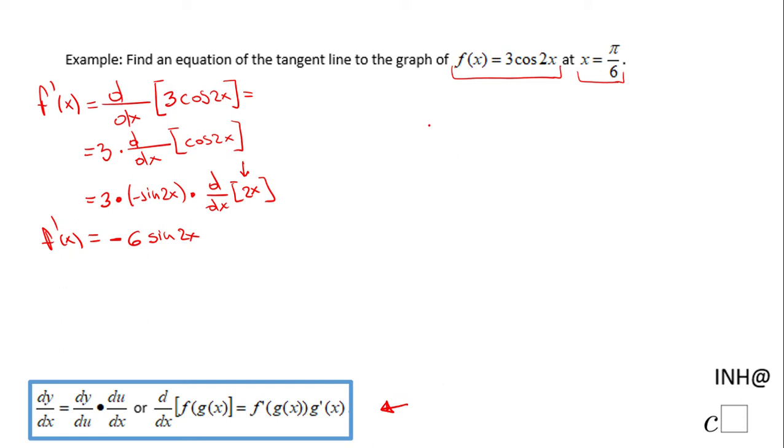Now we need to find the value of that function at π/6. So, let's replace x with π/6, and we have negative 6sin(2 times π/6), which is nothing else than π/3.